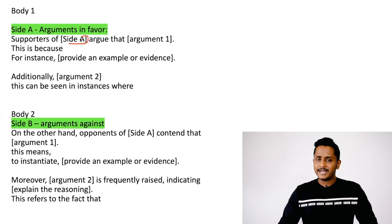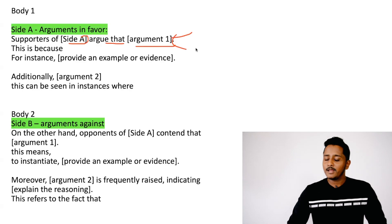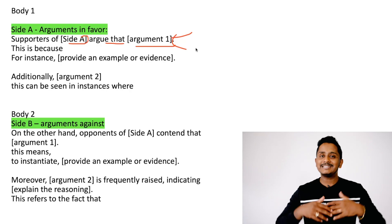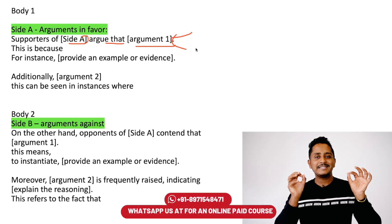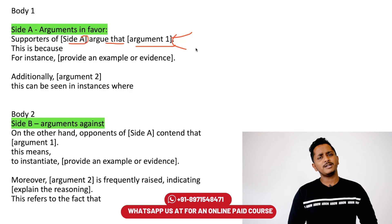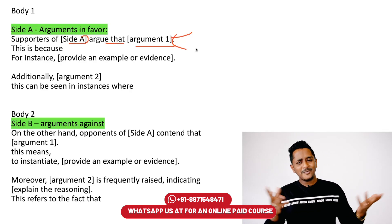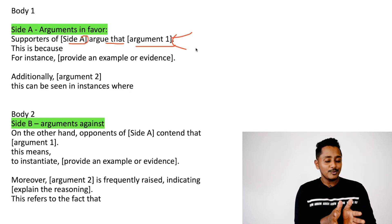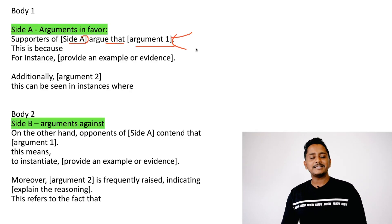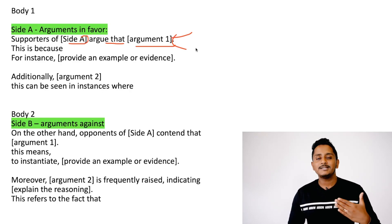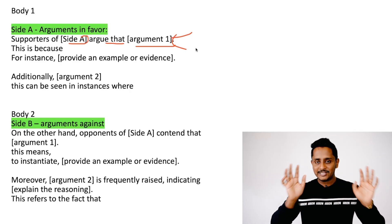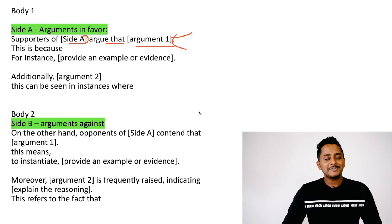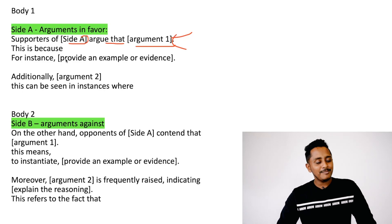Body paragraph one is all about discussing Side A. Since the question is 'discuss both sides,' you talk about Side A here, Side B in the next paragraph, then your opinion in paragraph four, and conclusion in paragraph five. Now, body one: 'Supporters of Side A argue that...' — give your main idea. Then write a supporting idea: 'This is because...' and give an example: 'For instance...'